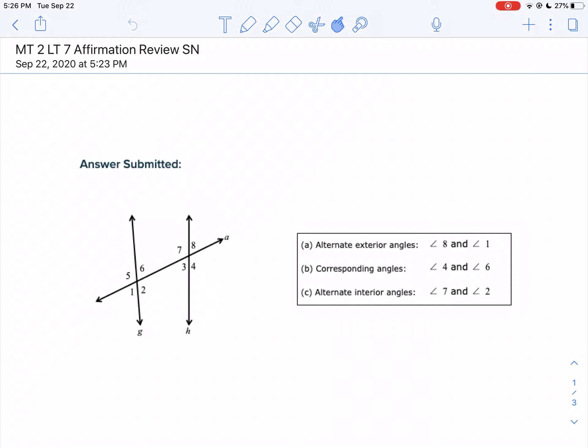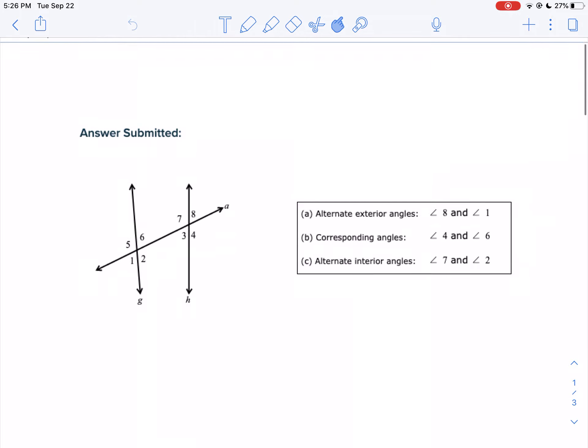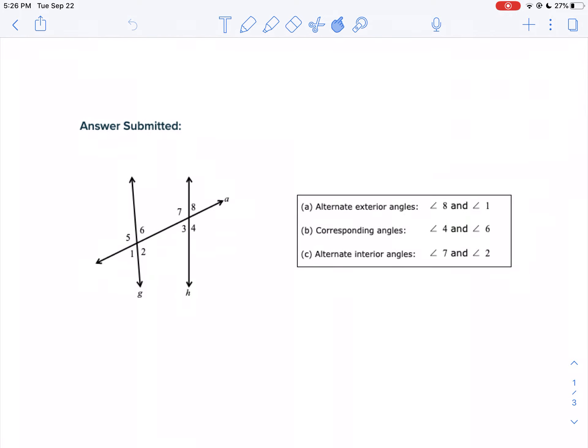Well, let's take a look at your MT2 LT7 affirmation. Now, this first question, there isn't a lot of work to show. In fact, there isn't any work to show. So I kind of accept that you will not have work for this problem.